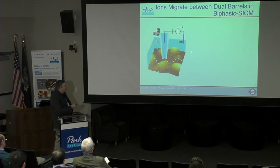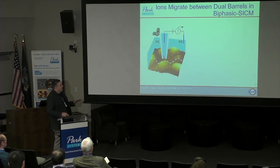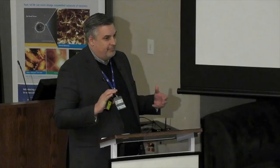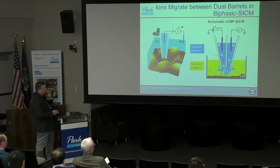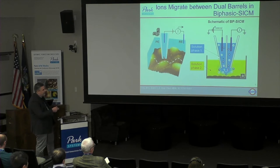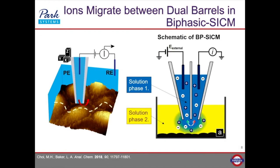What I'm going to tell you about are two kind of strange applications of SICM. The first is a technique that Brian Choi in my lab developed - we call it biphasic SICM. We call it biphasic because it uses a dual barrel pipette. We put one solution in the tip of the pipette and the outside solution is something different - it doesn't even have to have ions in it. So we can do scanning ion conductance microscopy without having ions in the bulk solution. If you apply a potential between these two pipettes, ions will move back and forth between the two barrels, and you can use this to generate a feedback loop.